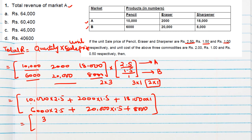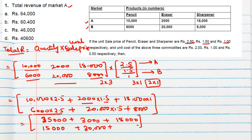Computing Market A: 10,000 × 2.5 = 25,000; 2,000 × 1.5 = 3,000; and 18,000 × 1 = 18,000. Adding them: 25,000 + 3,000 + 18,000 = 46,000. So the total revenue of Market A is 46,000, which is option C.